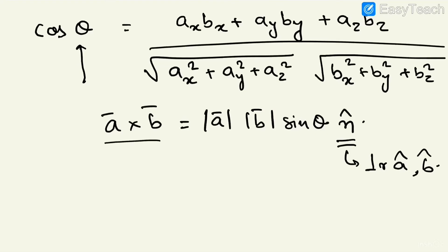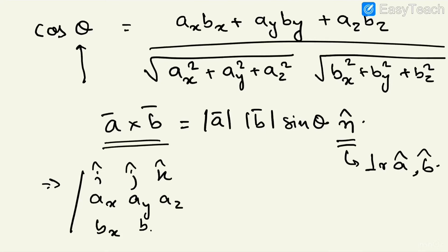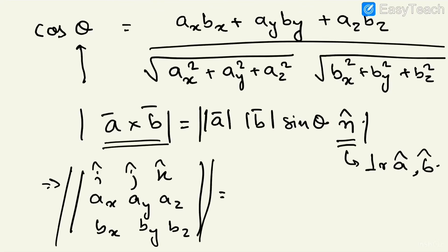The cross product in component form uses the determinant: i-cap, j-cap, k-cap in the first row, then the components ax, ay, az, then bx, by, bz. If you take modulus on either side, modulus of n-cap turns to one, and on the right side you get modulus of A times modulus of B times sine of theta.